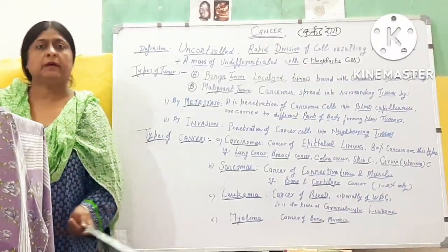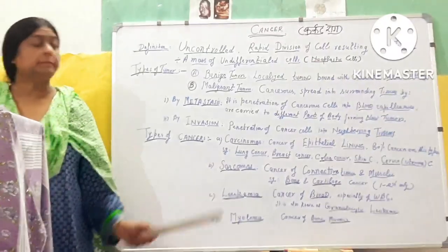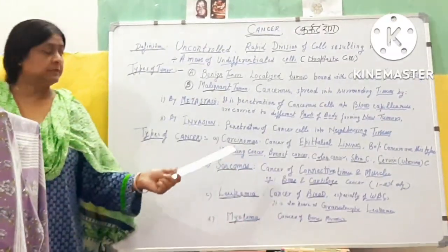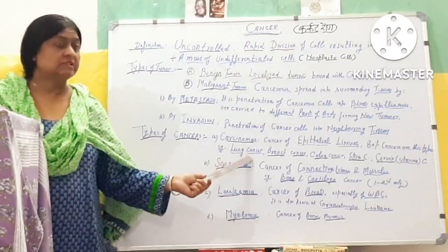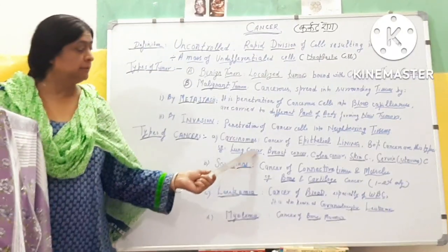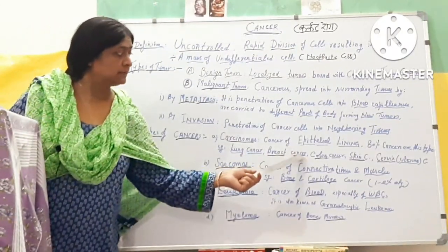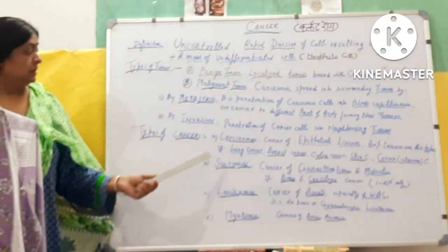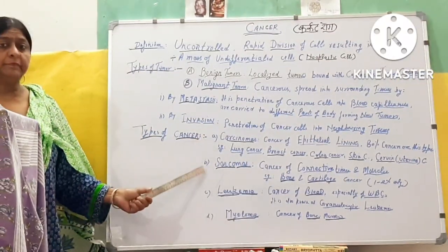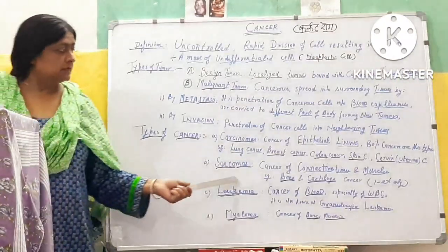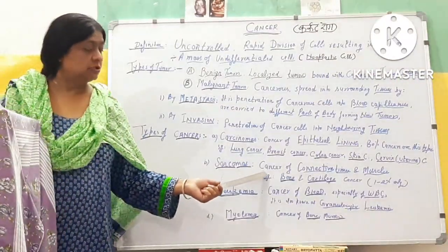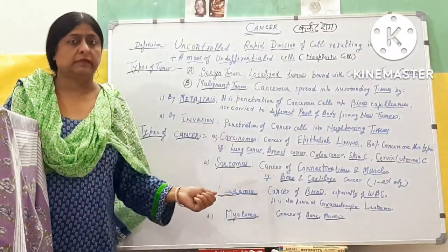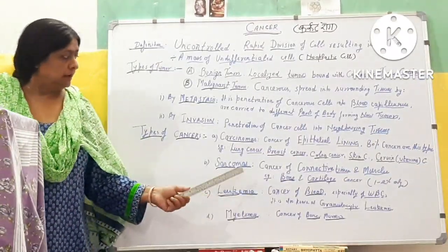Now, the types of cancers which are very common: the first one is carcinomas, which includes about 80 percent of cancer types. It includes lung cancer, breast cancer, colon cancer, and skin cancer. The second type is sarcoma — the cancer of connective tissues and muscles.